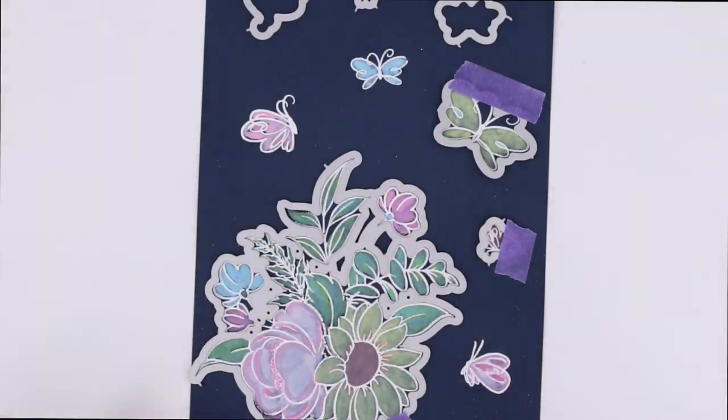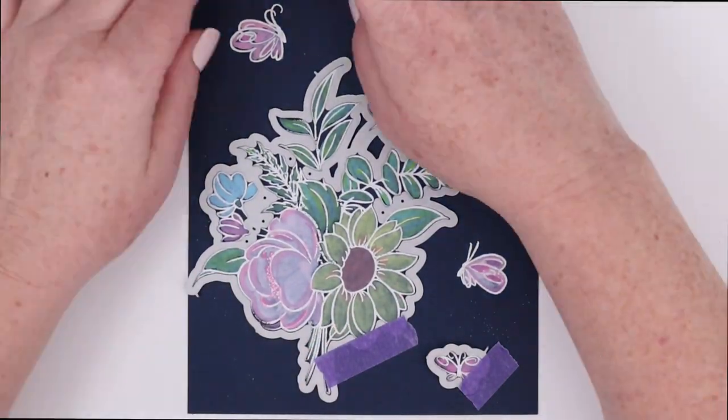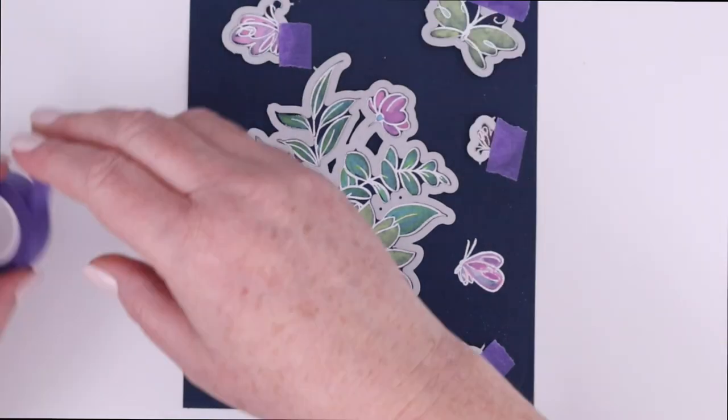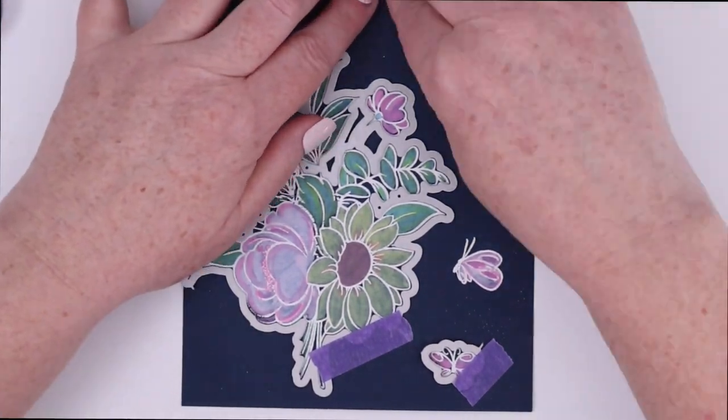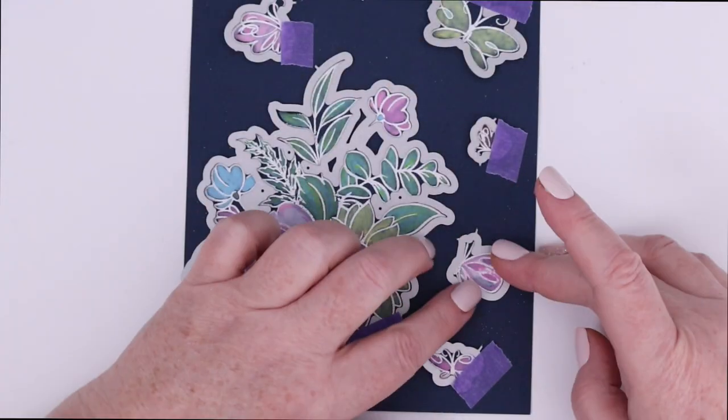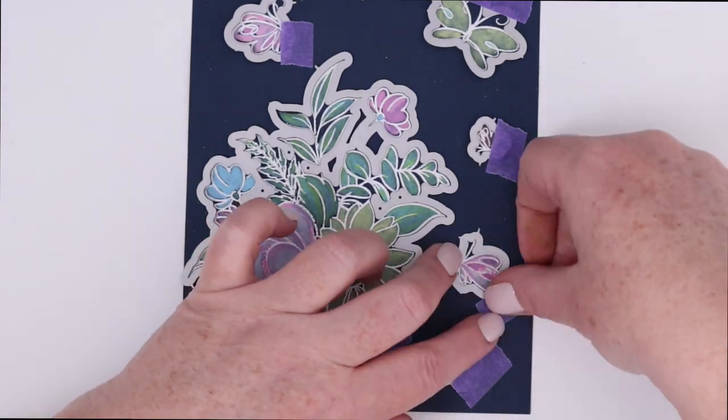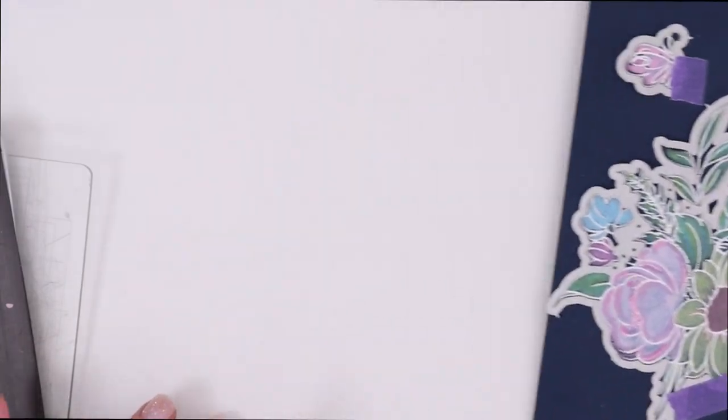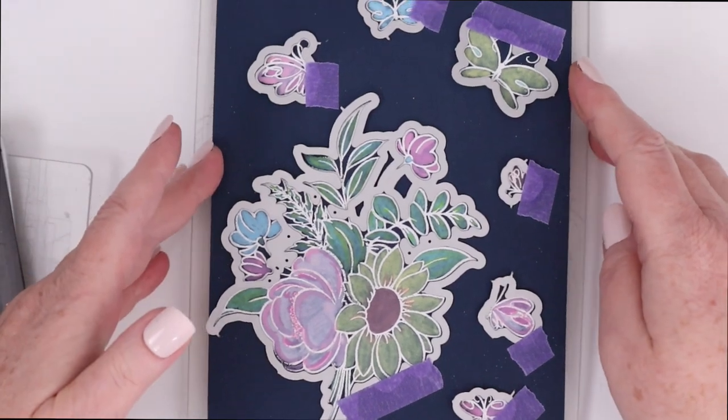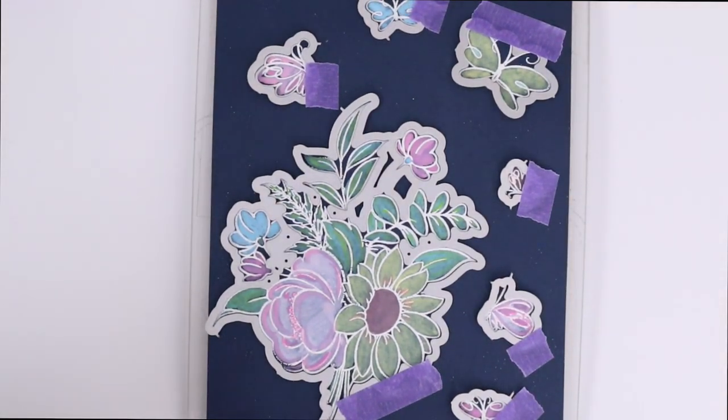The next thing that I'm going to do is use the matching dies and cut these all out. So I am putting purple tape on the edges of the die to make sure it stays in the right spot but that the tape doesn't pull away any of that ink because I did not coat it with anything or seal it in any way.